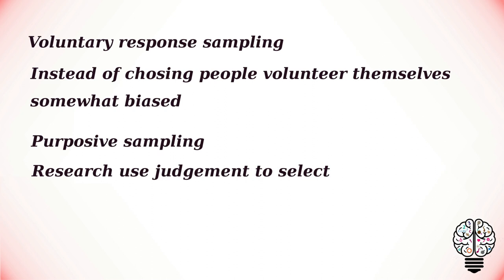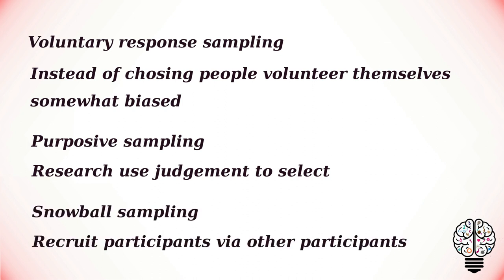The next type of non-probability sampling is purposive sampling. This involves the researcher using their judgment to select a sample that is most useful to the purposes of the research. It is often used in qualitative research where the researcher wants to gain detailed knowledge about a specific phenomenon rather than make statistical inferences. An effective purposive sample must have clear criteria and rationale for inclusion. For example, if you want to know more about the opinions and experiences of disabled students at your university, you purposefully select a number of students with different support needs to gather a varied range of data on their experiences.